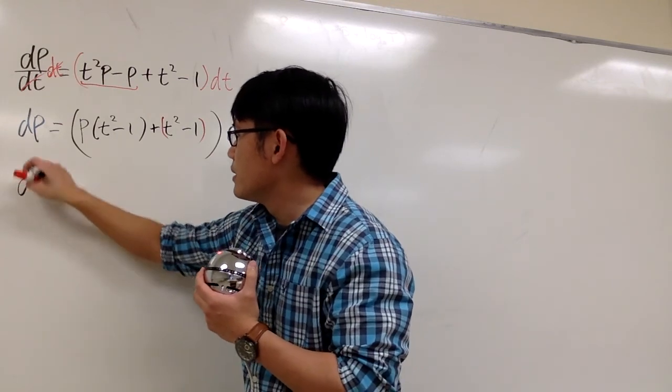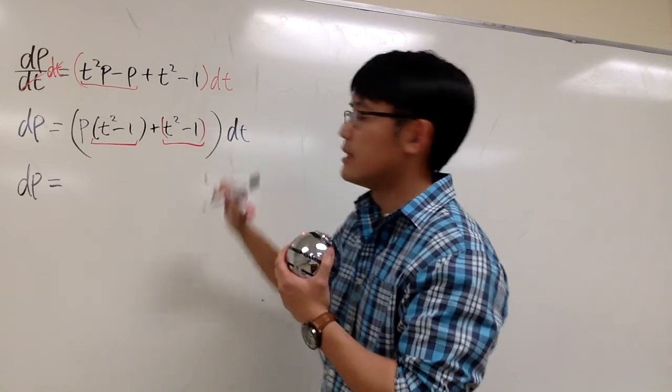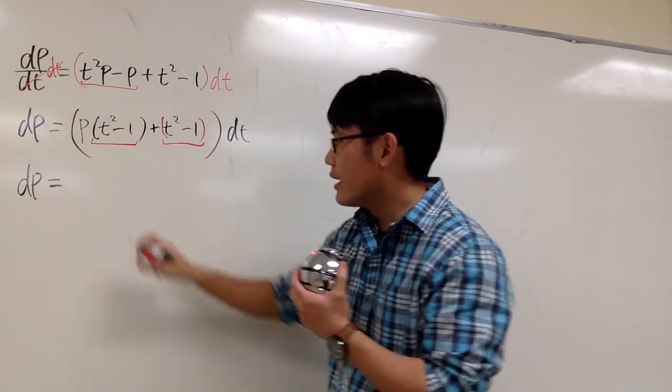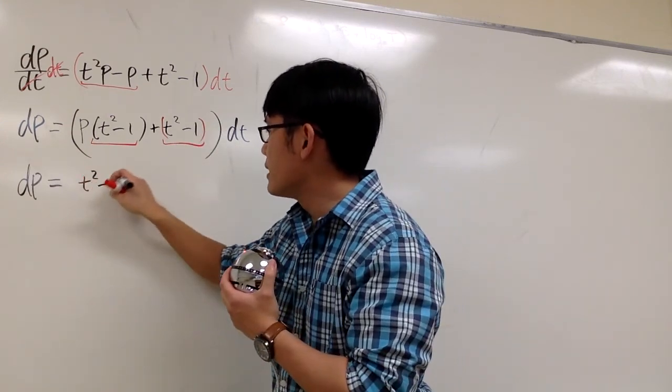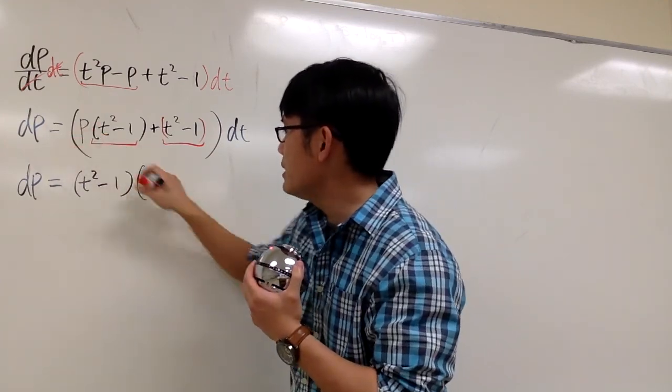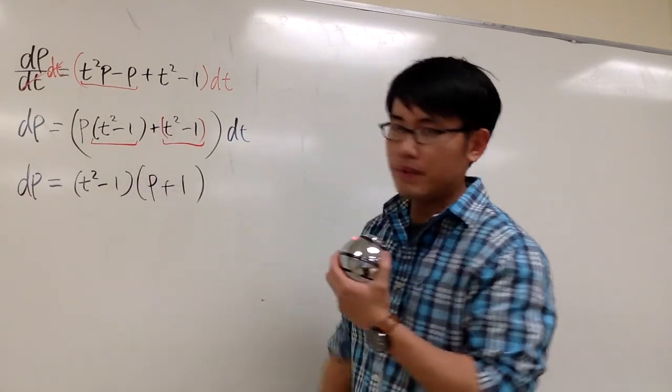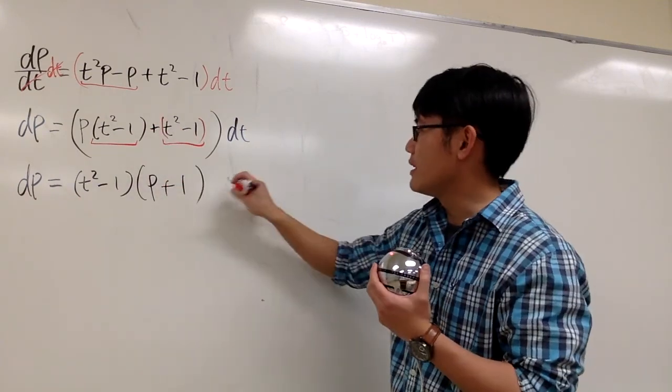So, with that being said, dp on the left-hand side still, I can factor out this and that together. So, we have t squared minus 1 that's being factored out. And what's left over? We have p that's being left over, plus, and we have like 1, p plus 1. And then we still have the dt.